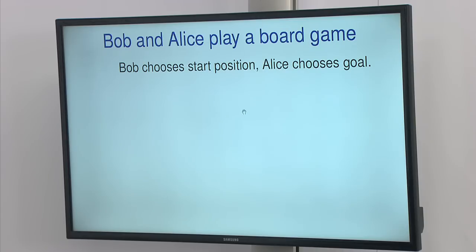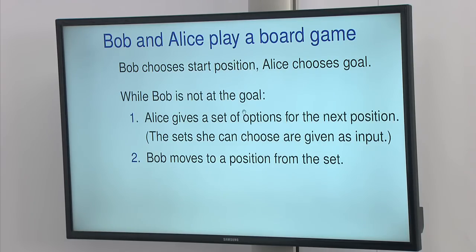So here's an explanation of how the game works. There are two players, Alice and Bob. Alice is trying to win the game, and Bob is trying to not lose the game. The two players start by Bob choosing the start position and Alice choosing a goal, and these are positions out of possibly 25 positions on the board.